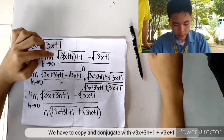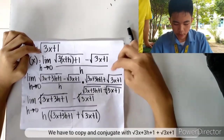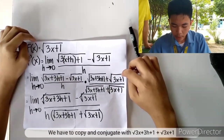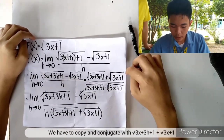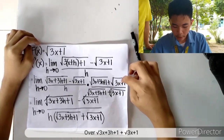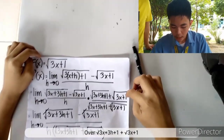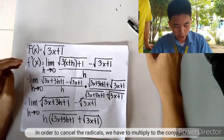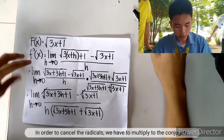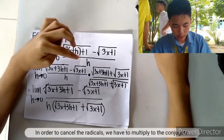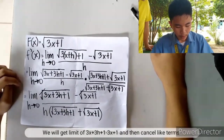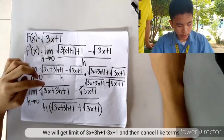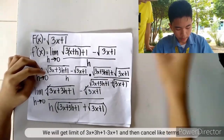We multiply by the conjugate: the square root of 3x+3h+1 plus the square root of 3x+1, over the square root of 3x+1 plus the square root of 3x+1. Then cancel the radicals.